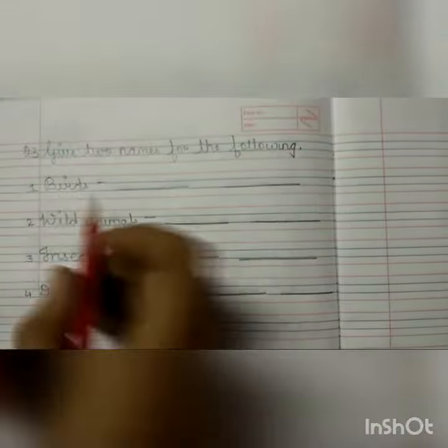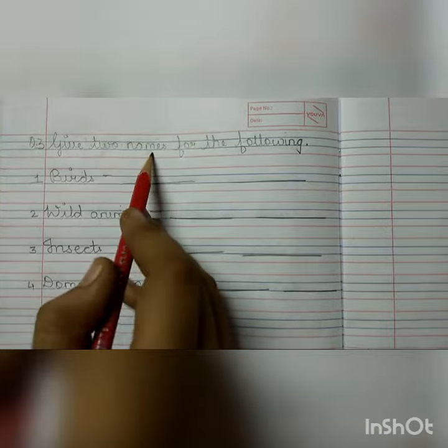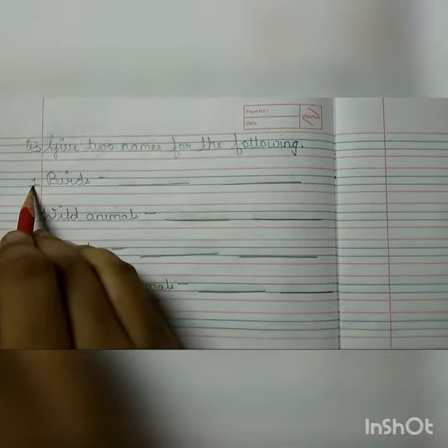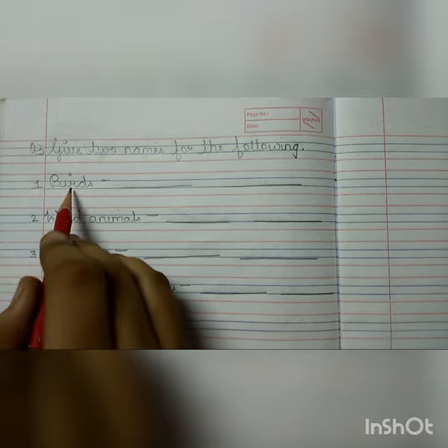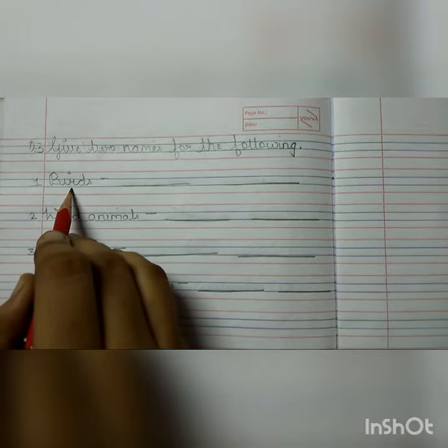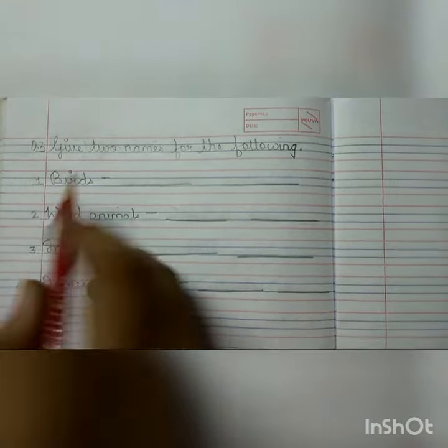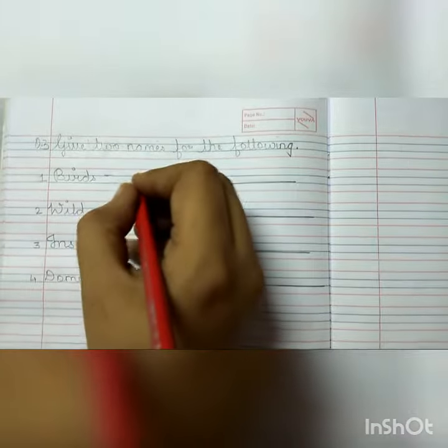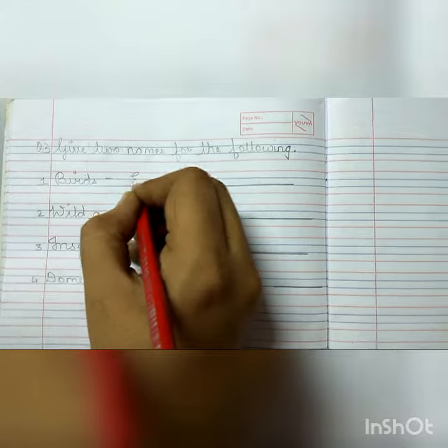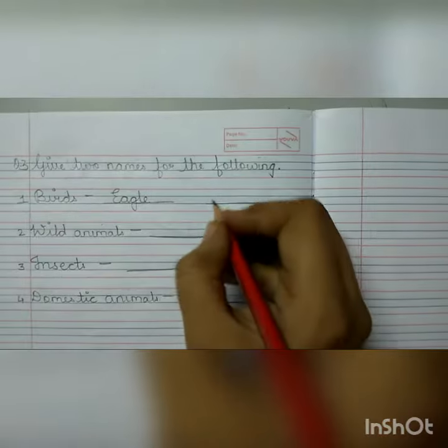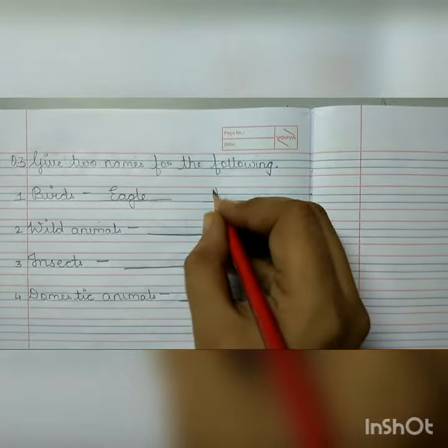Turn your page. Question number 3. Give two names for the following. You have to write two names for each. Number 1: Birds. Write here eagle and parrot.